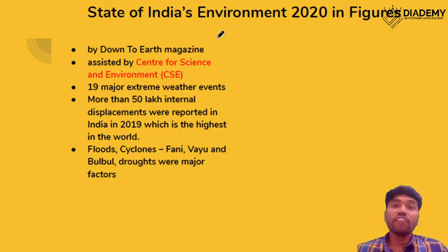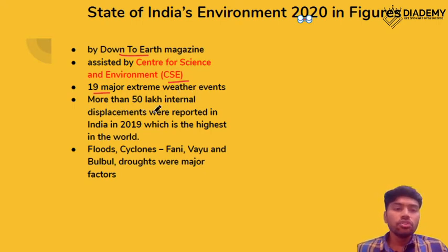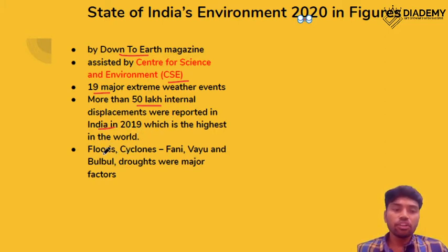The second topic is the State of Environment 2020, given by CSE, which also publishes a magazine called Down to Earth — one of the important sources for environment and ecology. The report states that in recent years there were 19 major extreme weather events like floods and droughts. Another important finding is that more than 50 lakh internal displacements occurred in India, the highest in the world, due to flood cyclones like Bulbul and droughts.